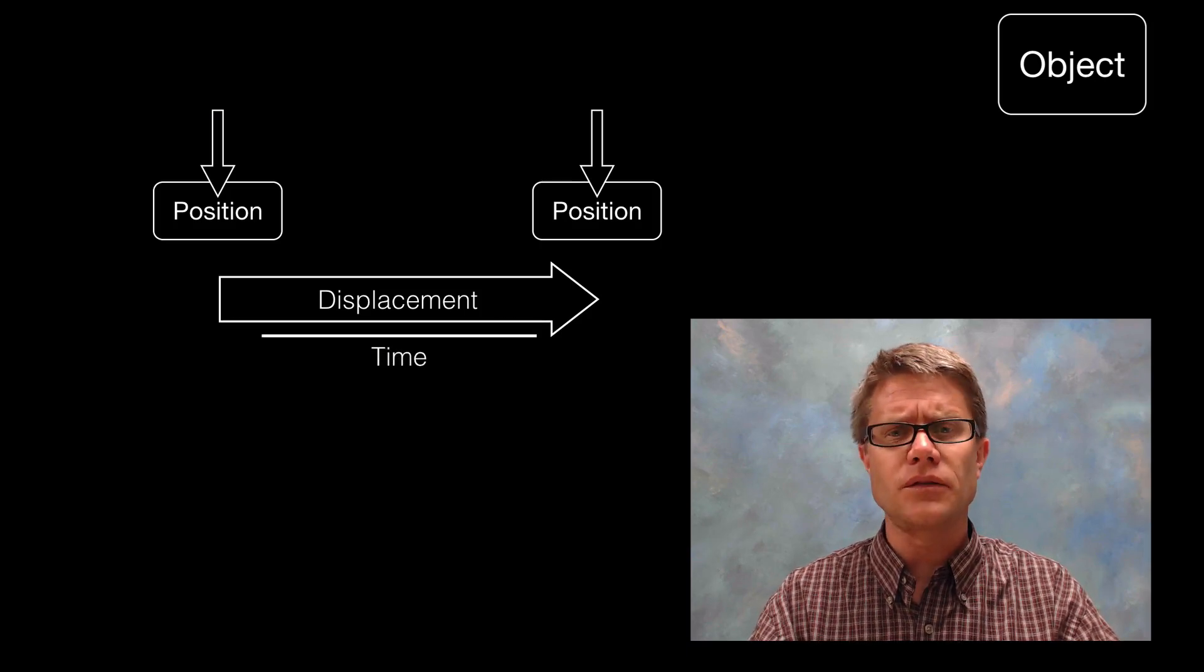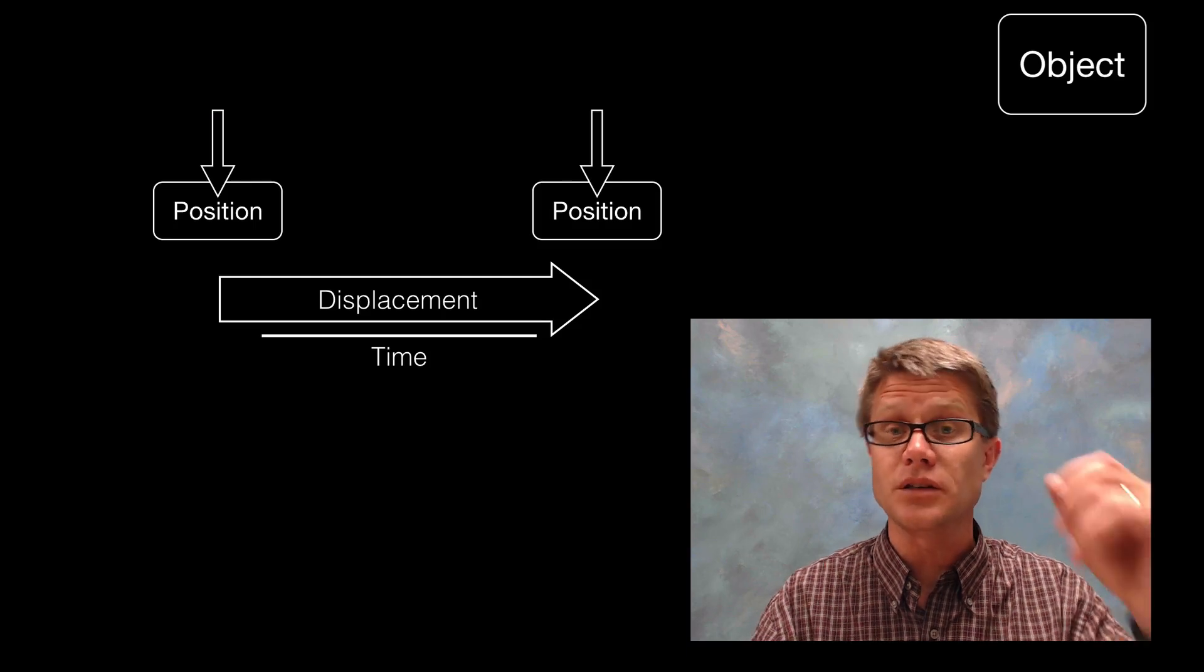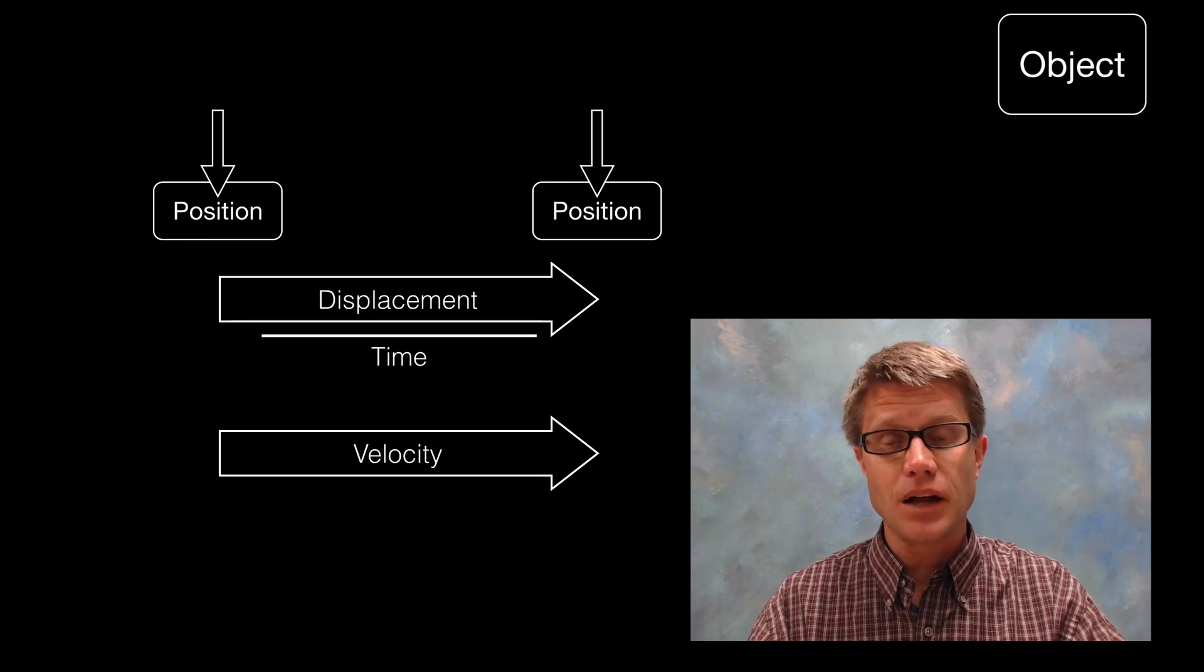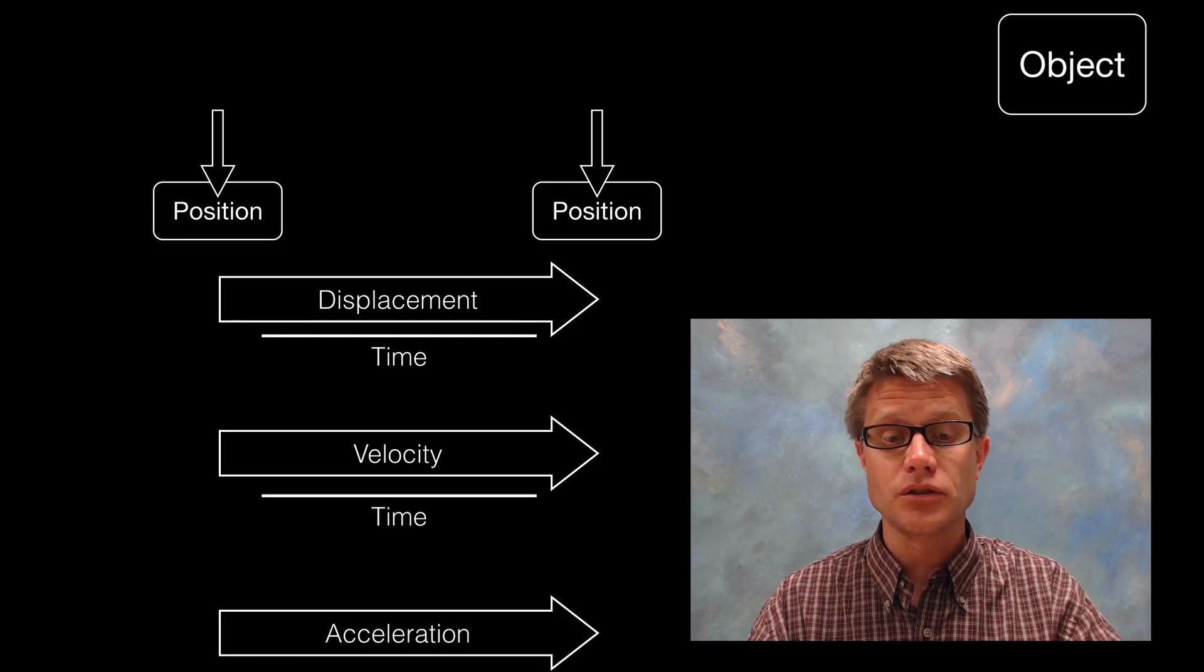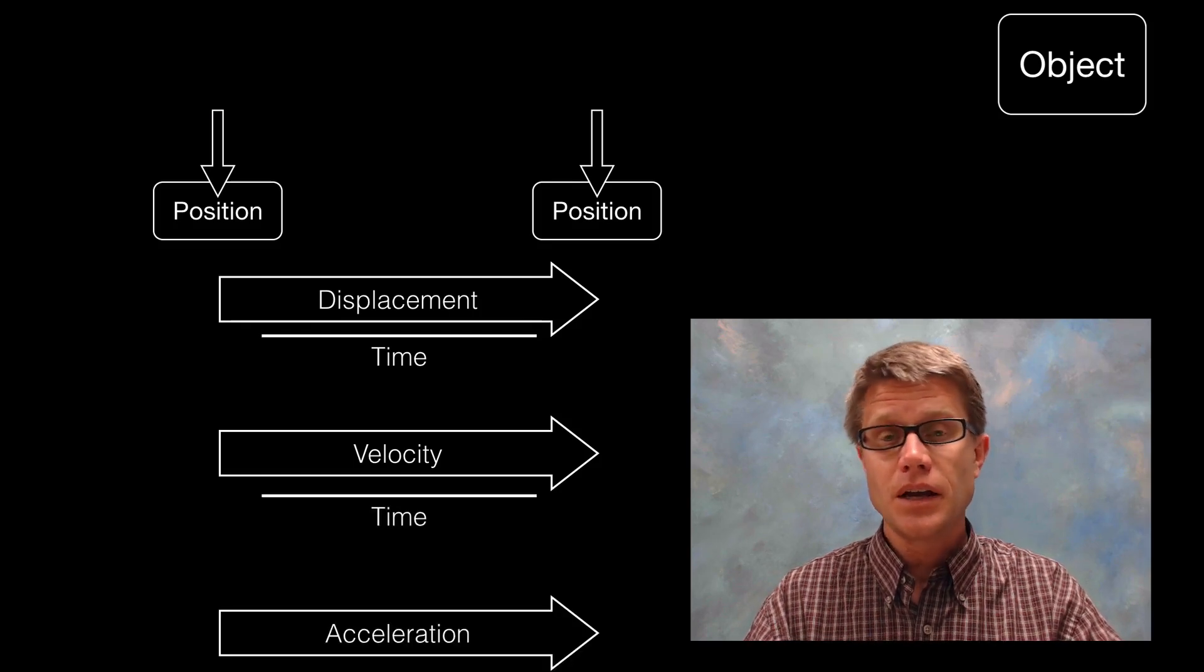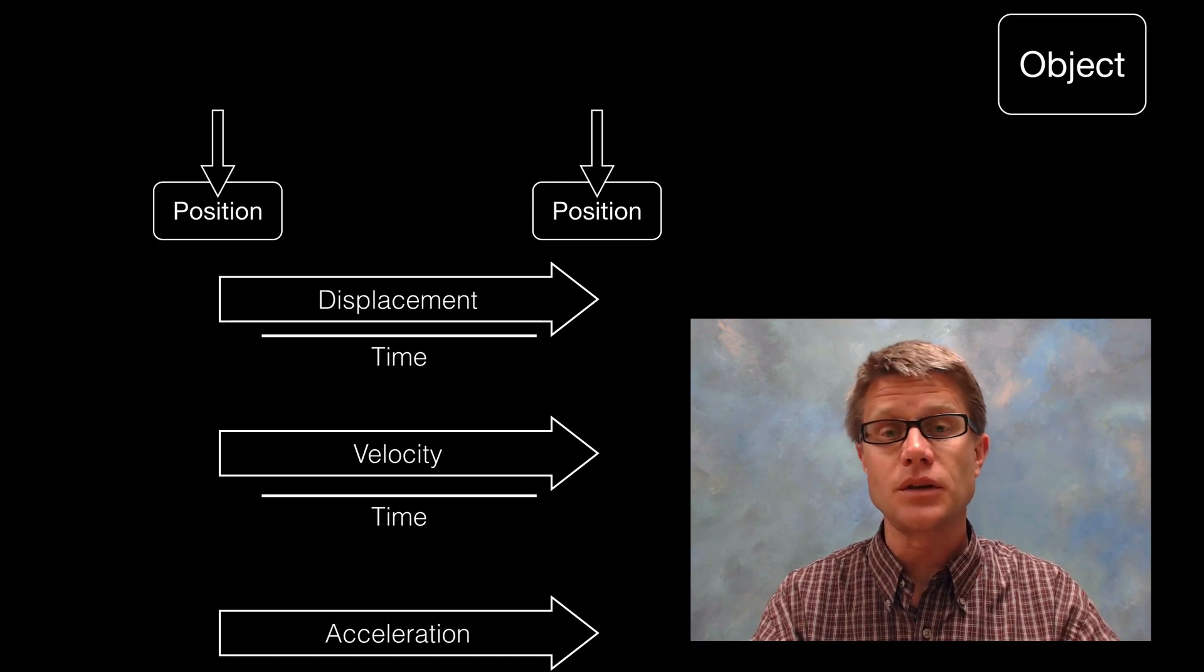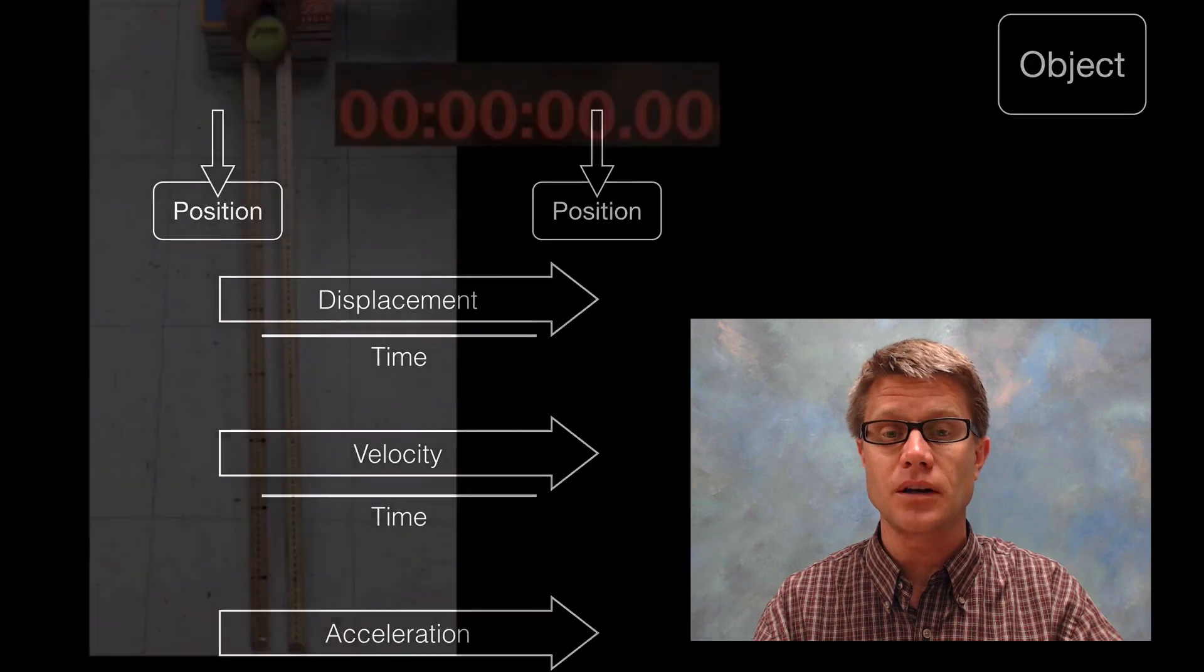If we take the displacement and divide it by time - how much time it takes to do that displacement - we've got another vector value called velocity: how fast it's moving and in what direction. When we measure the amount of velocity change over time, that's acceleration, also a vector value. There's really some cool graphing you can do to go from displacement versus time to velocity versus time and finally to acceleration versus time.